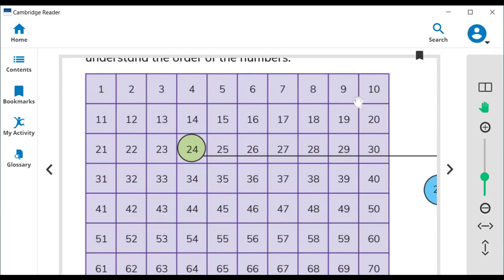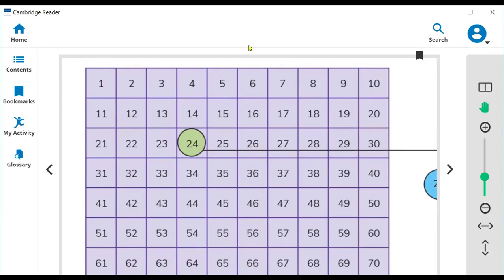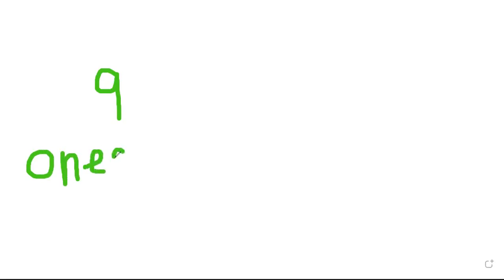When we have two-digit numbers, we call the first number ones and the second number will be tens. Let me show you how you can find ones and tens. Here we have the number nine. This number nine is a one-digit number, so we call it ones — this nine's value is ones.